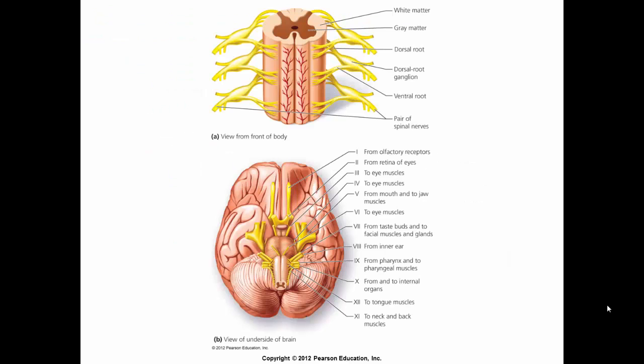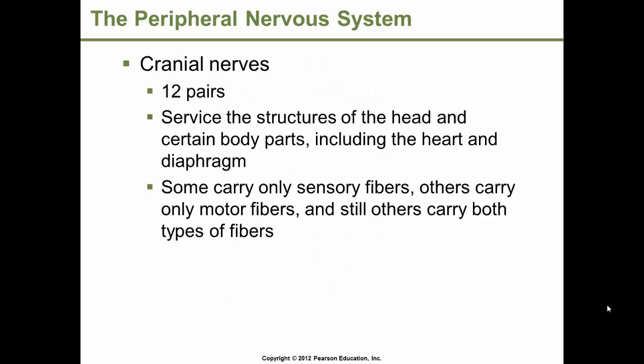The white matter consists of myelinated axons, and the gray matter is typically unmyelinated. There are 12 pairs of cranial nerves that service the structures of the head and certain body parts, including the heart and the diaphragm. Some cranial nerves carry only sensory fibers, others carry only motor fibers, and others carry both sensory and motor fibers.